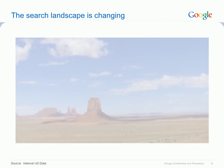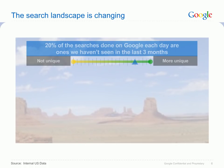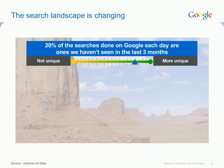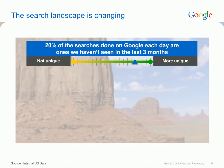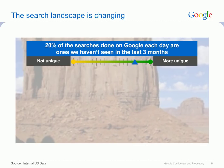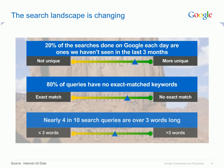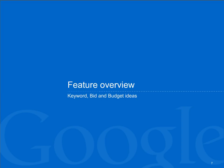What this says is that the search landscape is changing. 20% of the searches done on Google each day are ones we haven't seen in the last three months, and in some cases we have never seen them before. 80% of search queries do not match any AdWords advertiser's keywords exactly, and nearly four in ten search queries are over three words long. So let's take a look at the three main features of the Opportunities Tab and how they can guide you in this changing landscape.